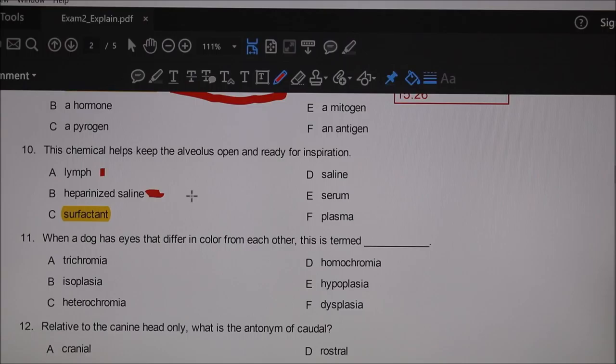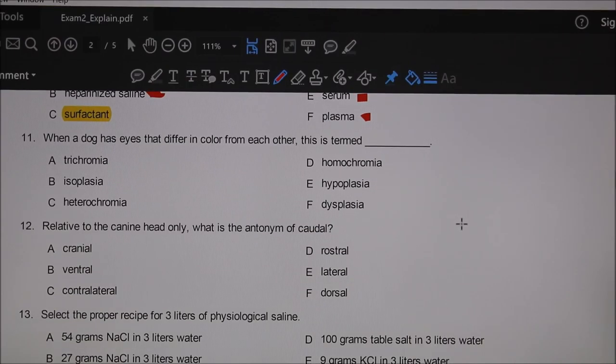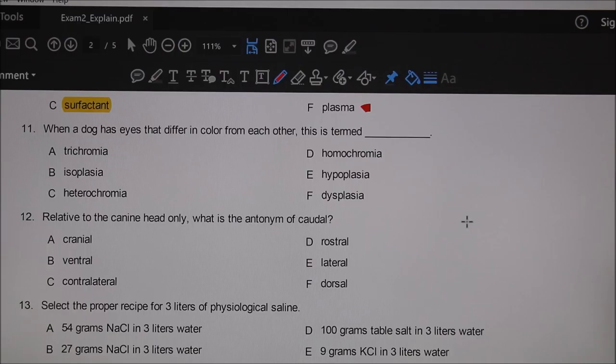Lymph would not be found in the alveolus. Heparinized saline is something you would make but never normally find in the alveolus. Saline is something you would make—0.9% sodium chloride. Serum and plasma would never be found in the alveolus.